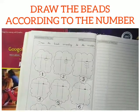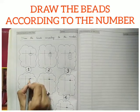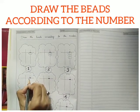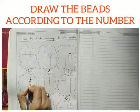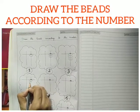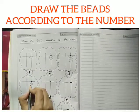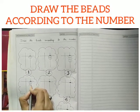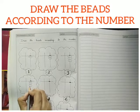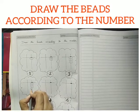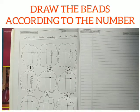For 4, draw 4 beads: 1, 2, this is 3 and this is 4.